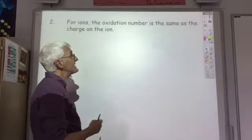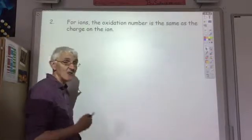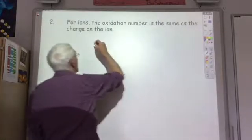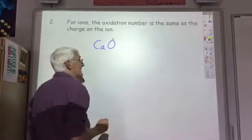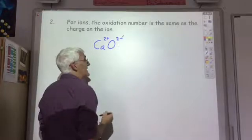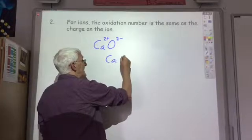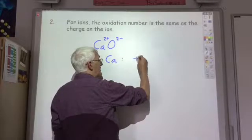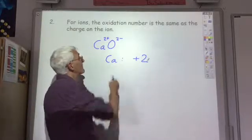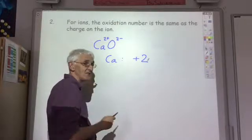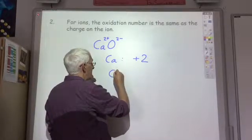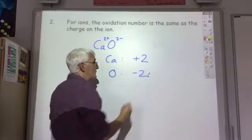The second rule is that for ions, the oxidation number is the same as the charge on the ion. So for example, in calcium oxide, the charge on the calcium ion is 2+ and the charge on the oxygen ion is 2-. So calcium has an oxidation number of plus two and oxygen has an oxidation number of minus two. Note: when writing the charge you put 2+, but for the oxidation state you write plus two — you do not get the mark if you write two plus.